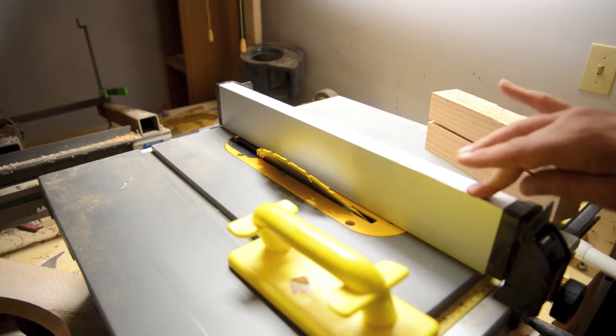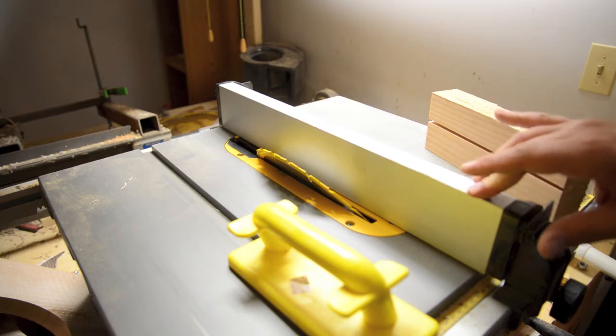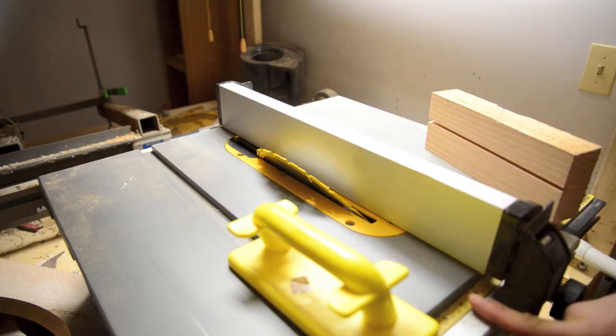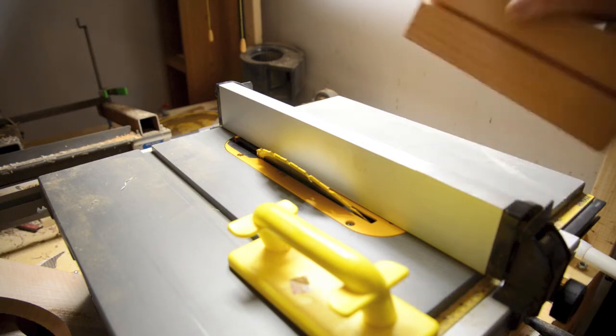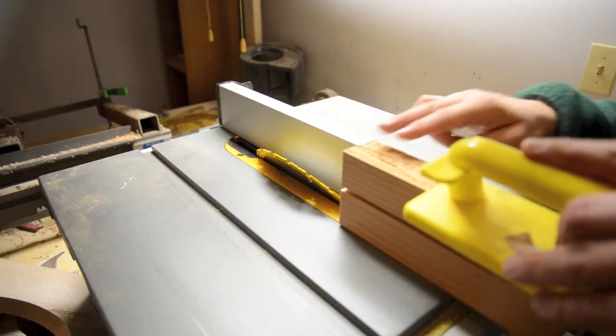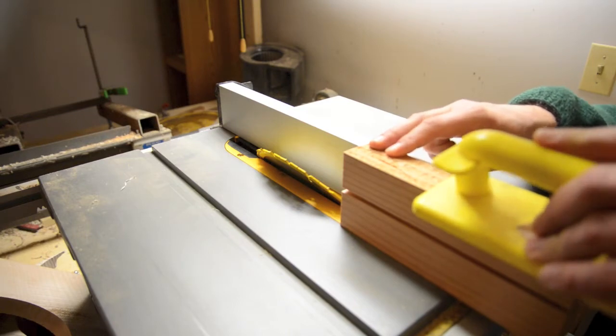Alright, next thing we do here is we take the fence, we flip it over on the other side, we set the blade to 35 degrees, we line up the depth, get my push block, I'm going to hold it here, push and cut.